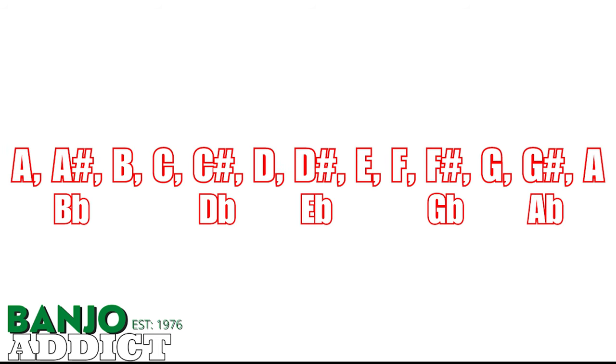Looking at the notes in the scale again, let's assemble an A minor scale. You will begin with A as the first note in the scale. Then from A to B is a whole step. From B to C is a half step. From C to D is a whole step. From D to E is a whole step. From E to F is a half step. From F to G is a whole step. And from G to A is a whole step.